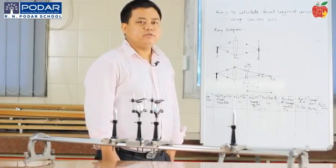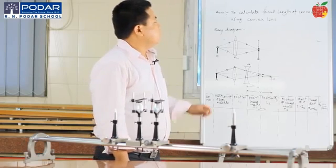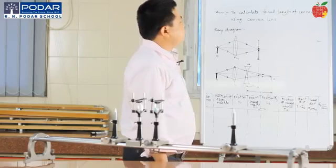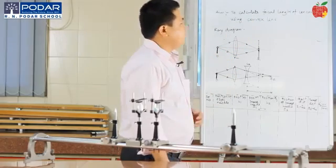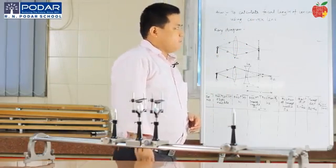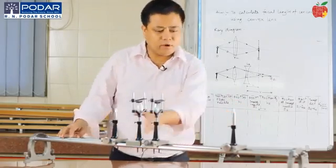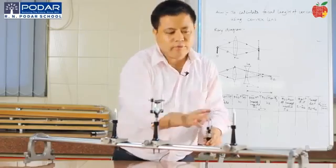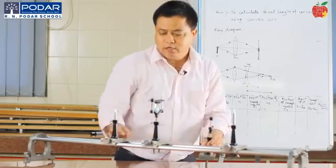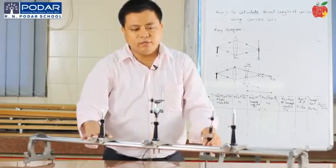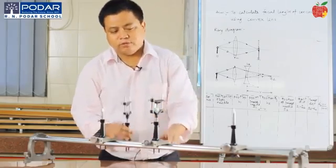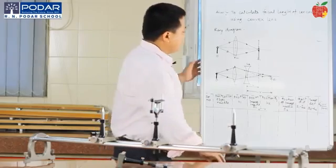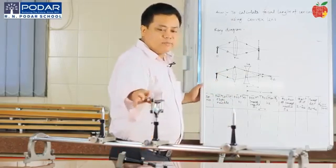Today we will learn about the optical instrument. The aim of the experiment is to calculate the focal length of the concave lens using the convex lens. Over here we have the optical bench system and we have two needles — one used as the object needle and the other as the image needle. This is your convex lens and this is your concave lens.